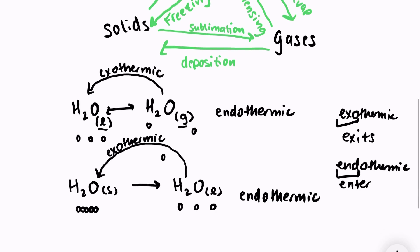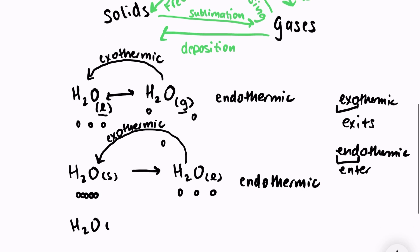And then let's also look at solid water turning into gaseous water. Again, our particles are really close together, barely moving. And when they turn into a gas, they now have a lot more energy. They're more spread out, moving quickly. So in order for that change to happen from a solid to a gas, there has to be an input of energy. So it's an endothermic change. Energy had to go into that system.